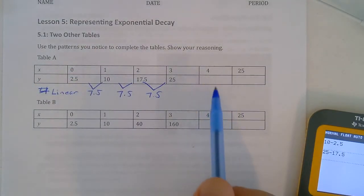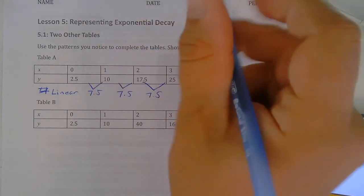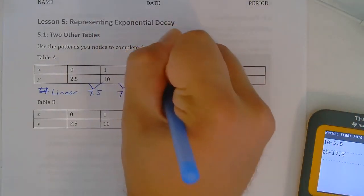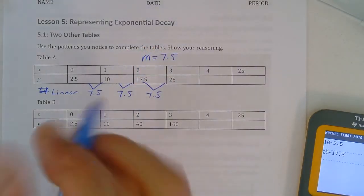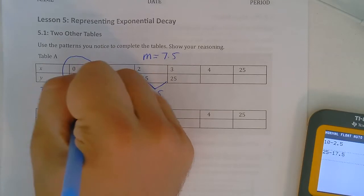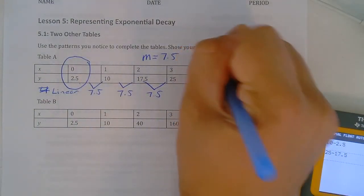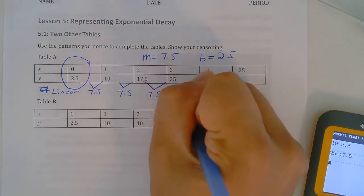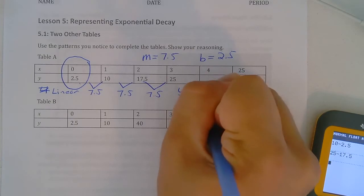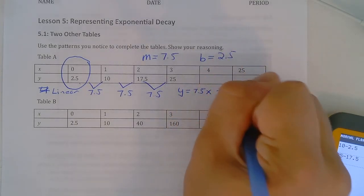So what I can do is write an equation. So I know right now that m, the slope, is 7.5. And then the y-intercept is the initial value of y when x is 0, so b is equal to 2.5. So my equation would be y equals 7.5 times your x value plus 2.5.